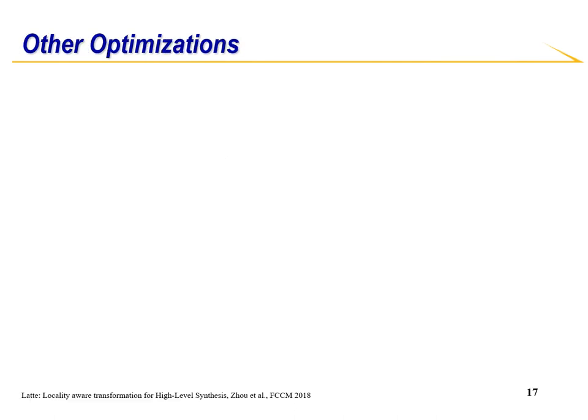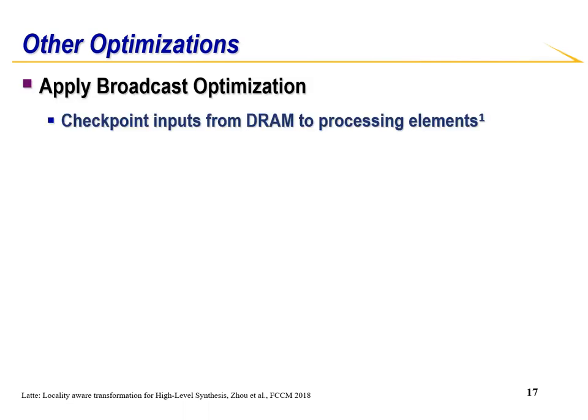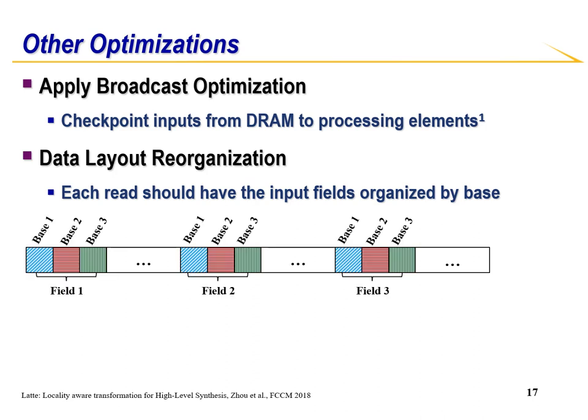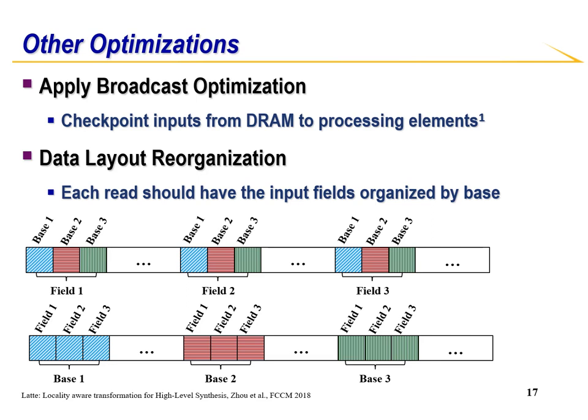There are additional optimizations to improve frequency and achieve a fully pipelined design. First is the LATTE optimization. The way LATTE works is by checkpointing inputs from DRAM to the processing elements, which eases routing and allows for higher design frequency. Next is to reorganize the data so that it can be easily parsed in a single cycle. Originally, the data was organized by field, which led to random stride access since each read can have a different number of bases. However, by organizing by bases, the position access at each field is now at a fixed interval.